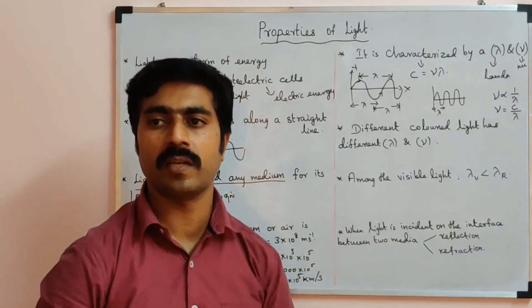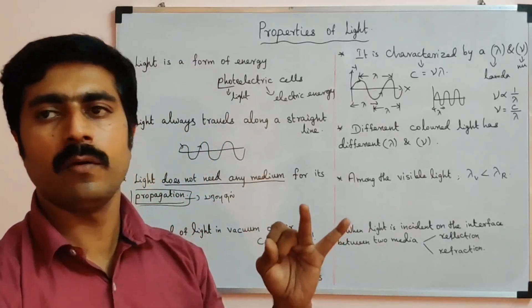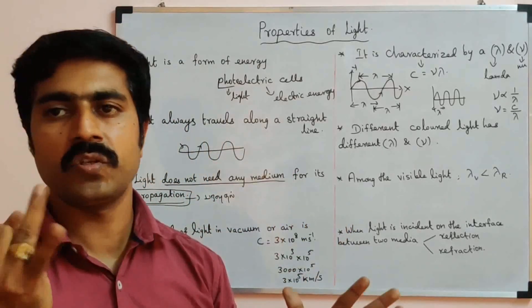The different colors of visible light are: violet, indigo, blue, green, yellow, orange, and red — seven colors forming the visible spectrum (VIBGYOR).